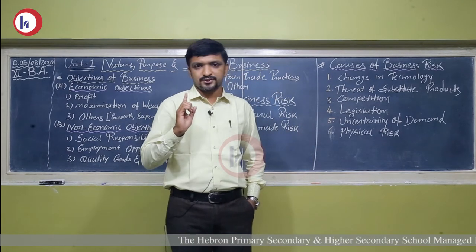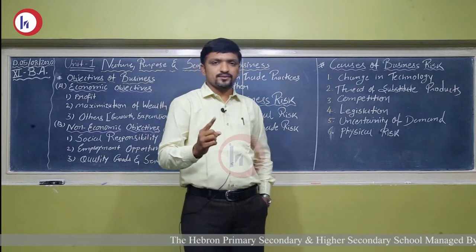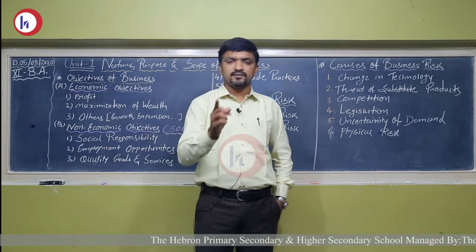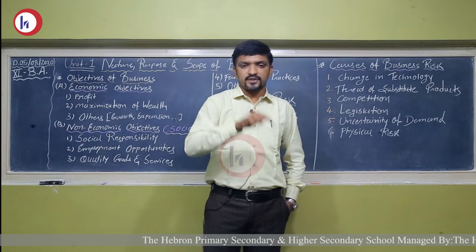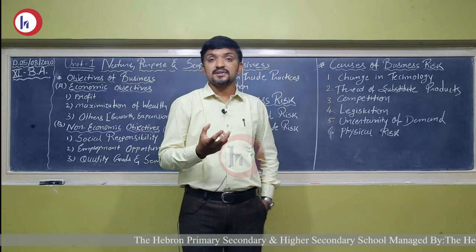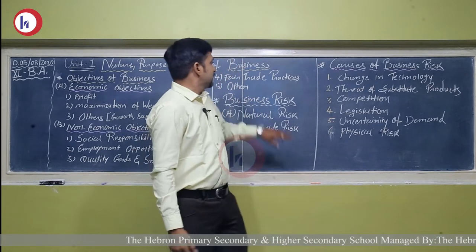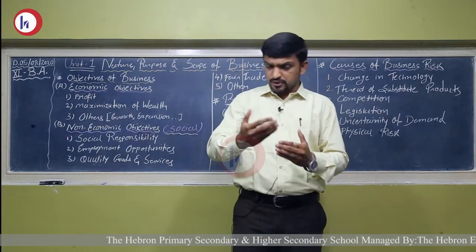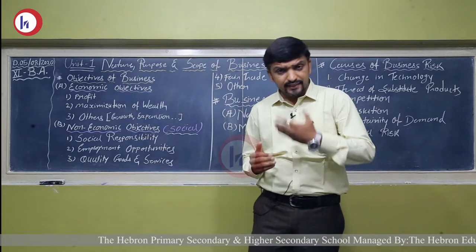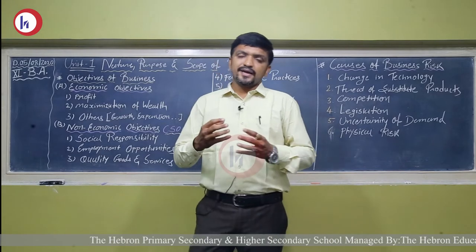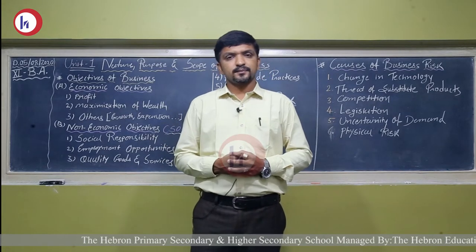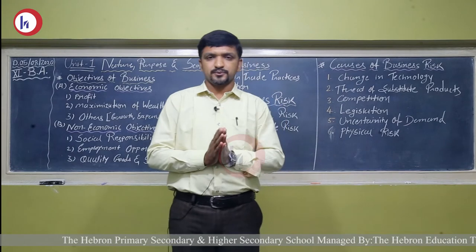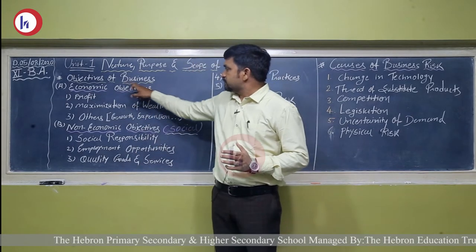Consumer is the king of the market. The days are gone when producers produced and customers simply bought — now producers must supply whatever the customer demands. Number five, other social objectives include regular bonus and incentives to employees, education facilities for children of employees, health facility, and canteen facility at the premises.